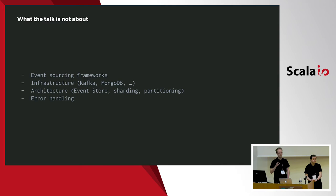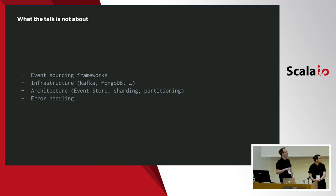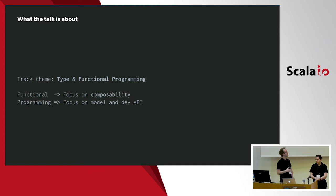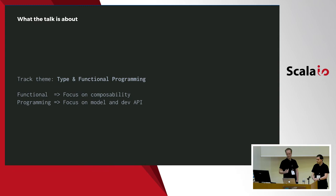To clarify: there are things we won't be speaking about today — any particular event sourcing framework, infrastructure concerns, architecture, or error handling. Since the theme of this track is typed and functional programming, we'll focus on two things: composability, and the model and API developers use when doing event sourcing.